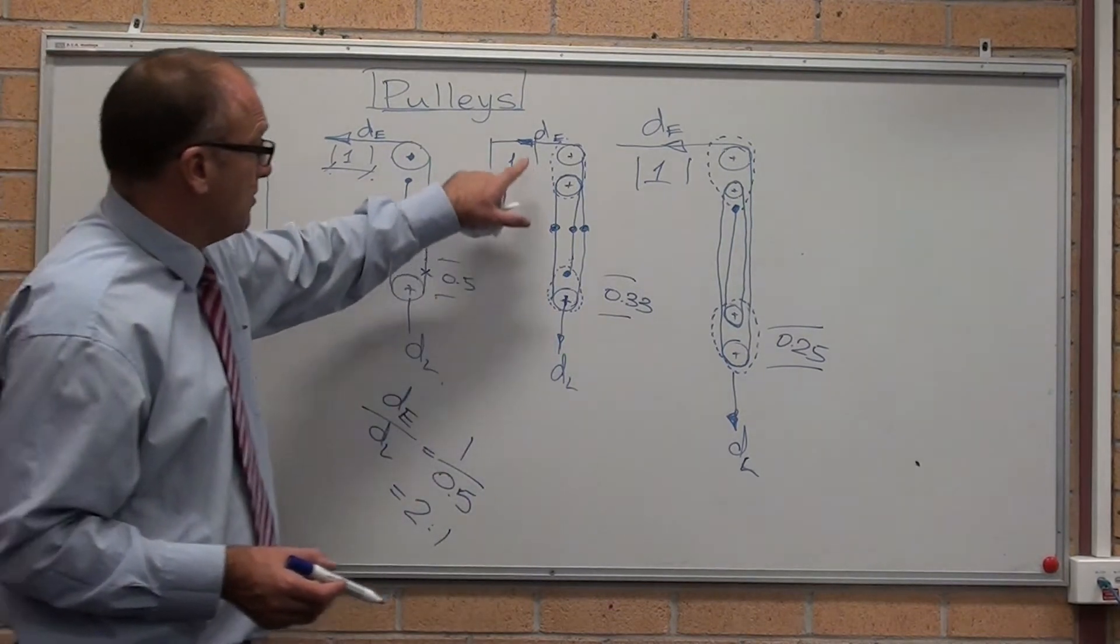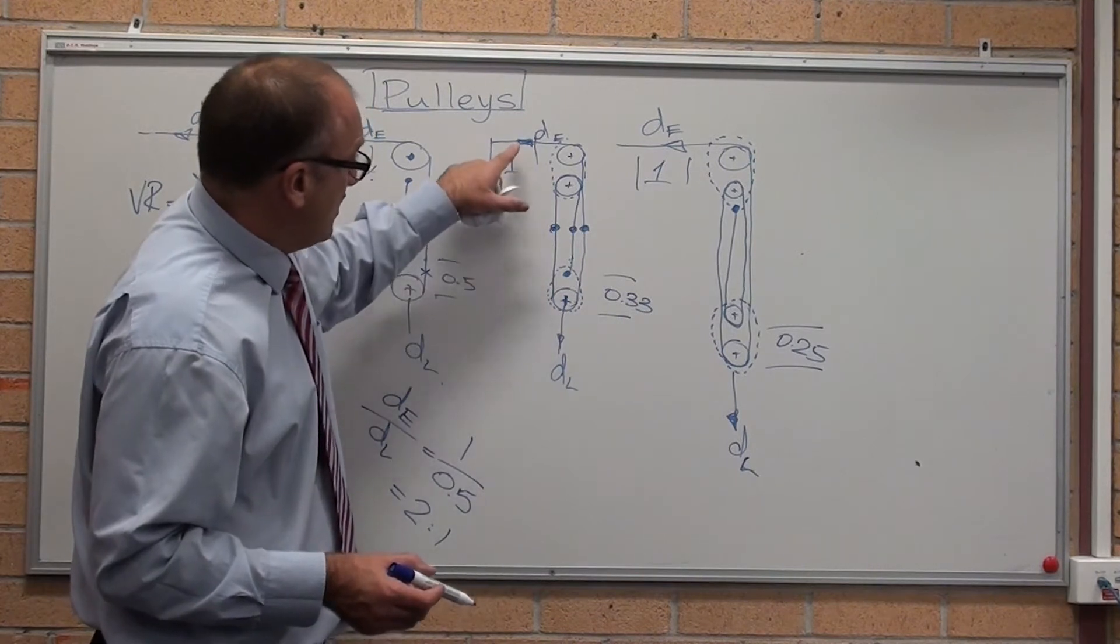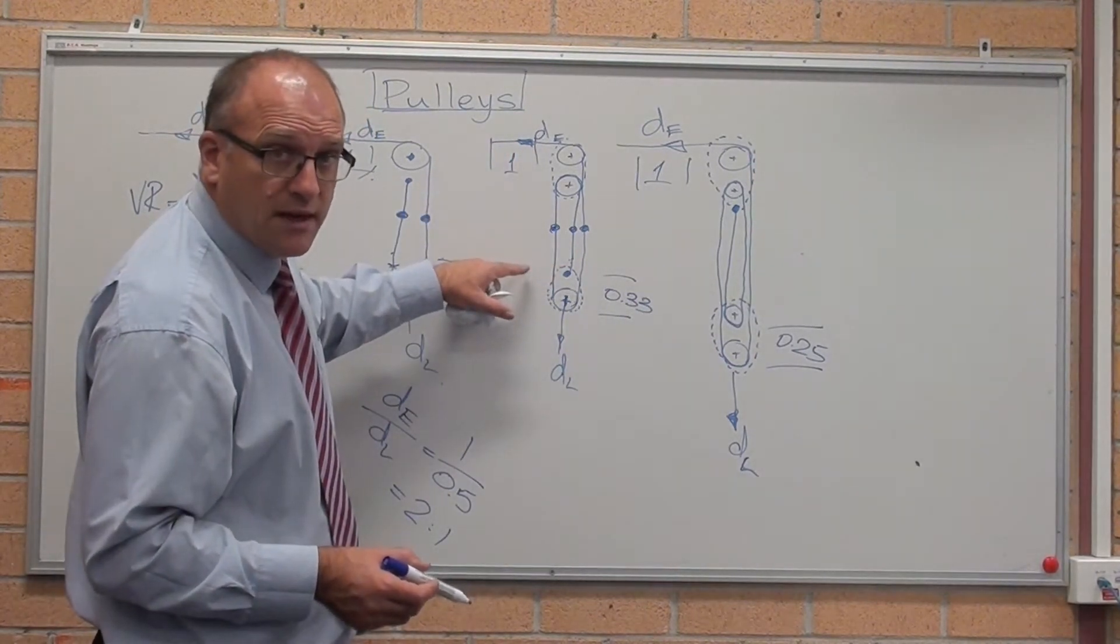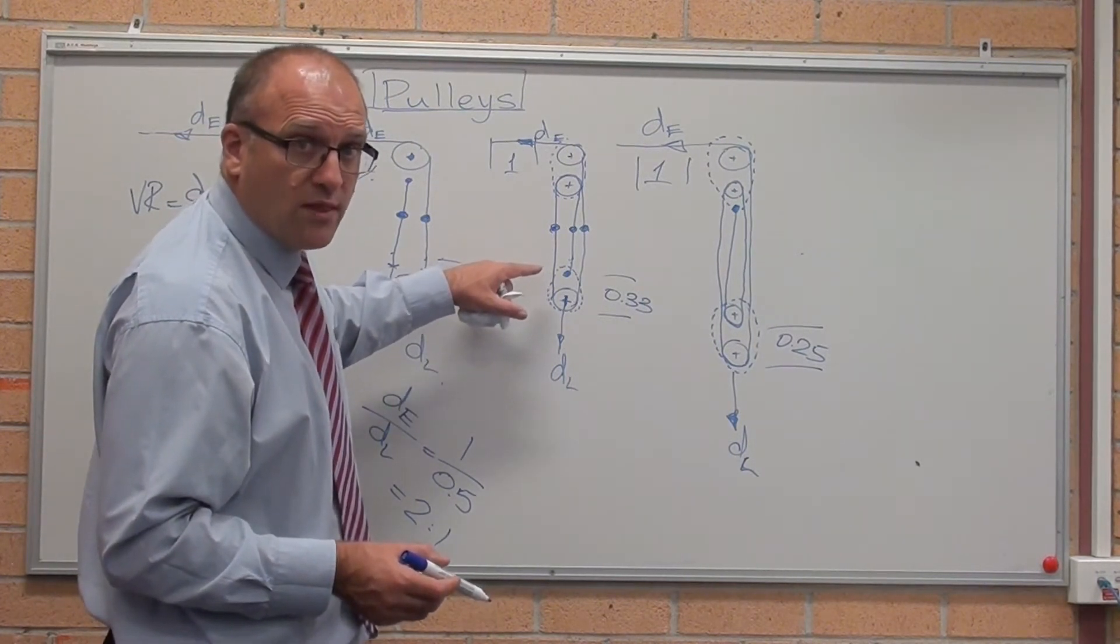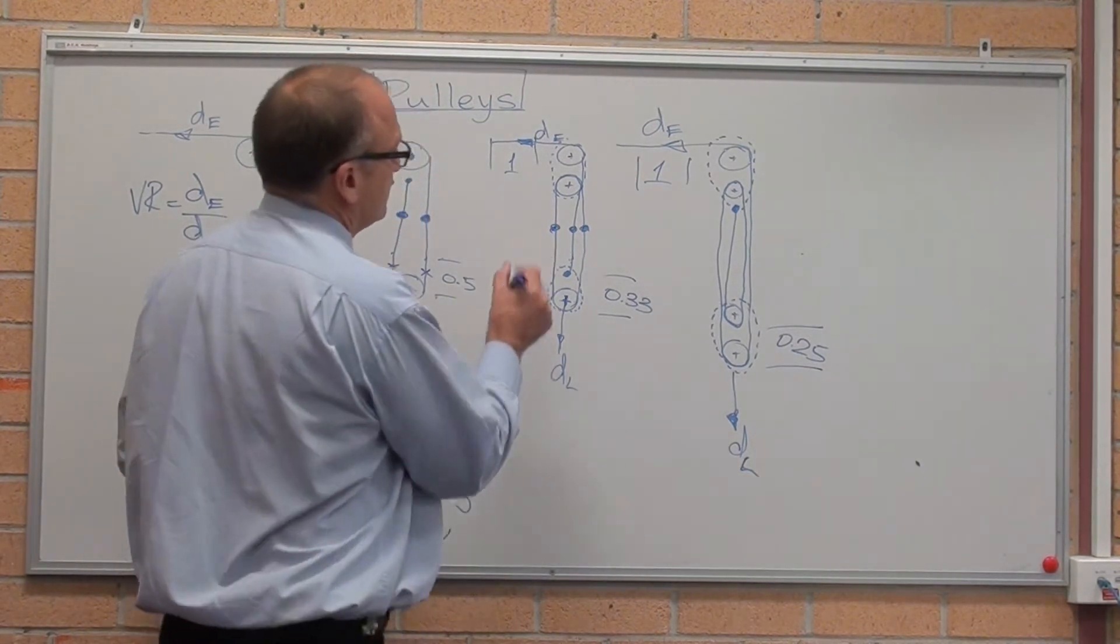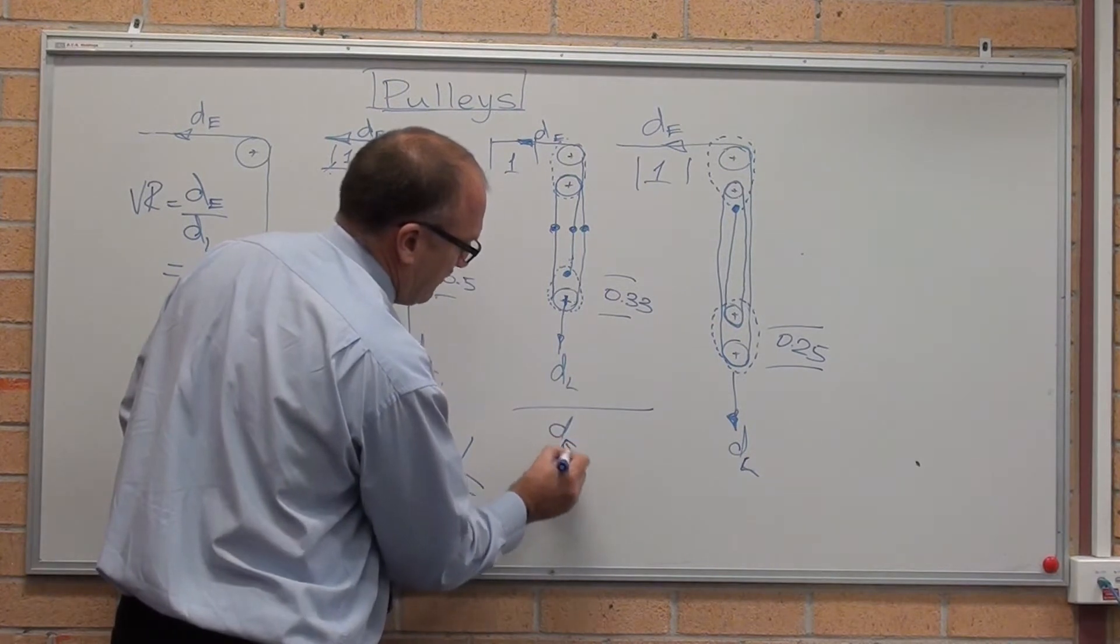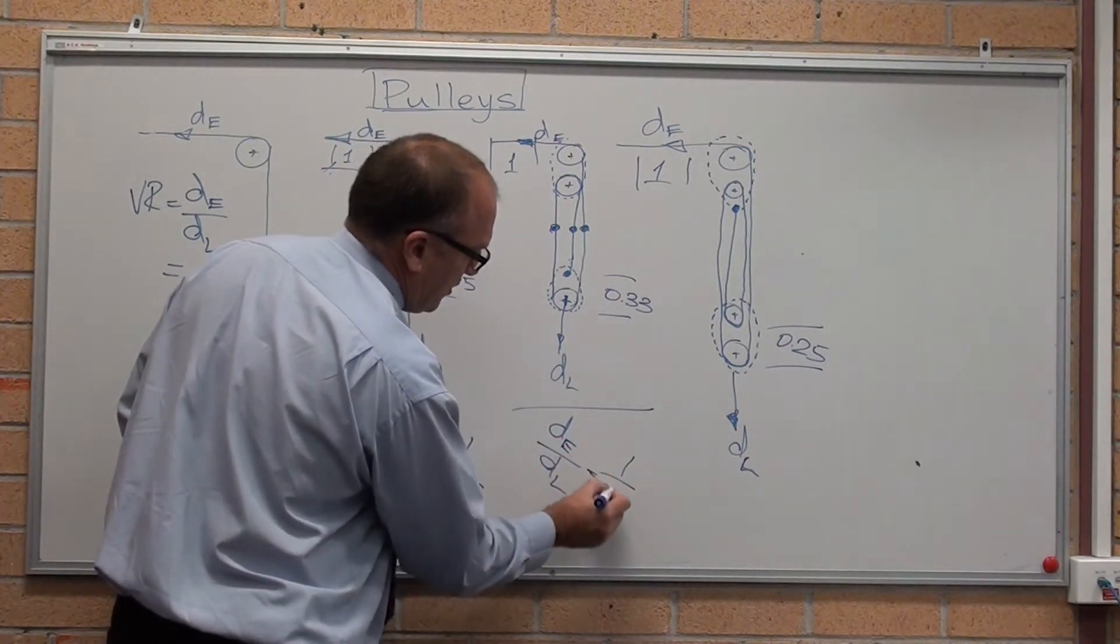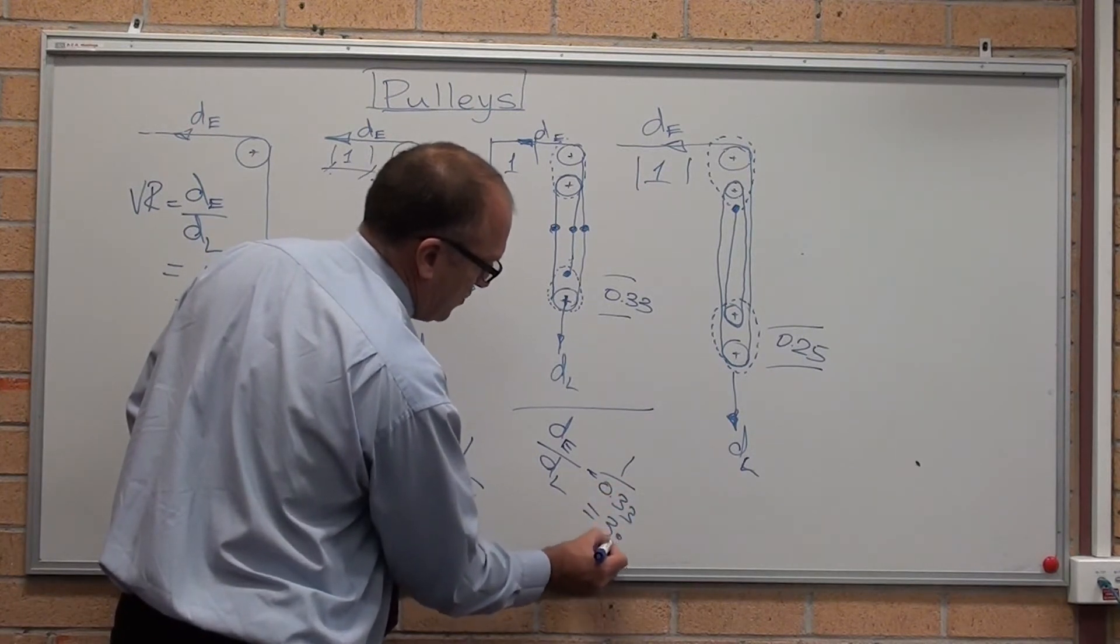Look at this next example. Distance moved by the effort. If that's moving one meter, then on average those ropes move one meter as well combined. Three ropes, one meter, one third of a meter on average each. So distance moved by effort divided by distance moved by the load equals one divided by 0.33 equals three as to one.